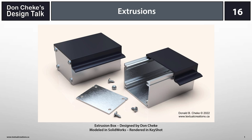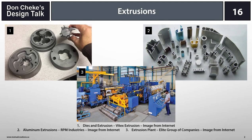Welcome to design talk 16. This design talk is about extrusions and their use in manufacturing. Pictured here is a simple extrusion box that we'll look at and discuss further along in the presentation. Extruding is a process used to create objects of a fixed cross-sectional profile, done by pushing material through a die of the desired cross-section. The resulting product is an extrusion.